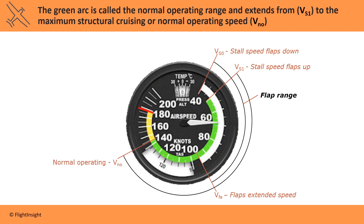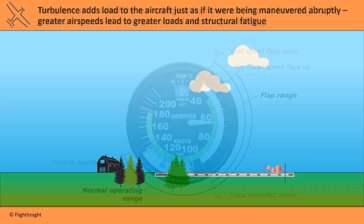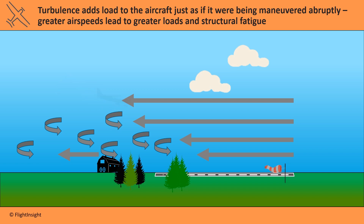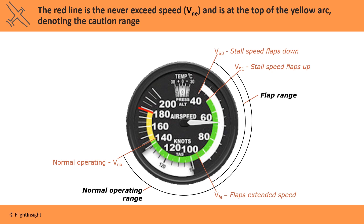The green arc is the normal operating range — green for normal. Below the green arc you're only flying with the flaps out, and at the top of the green arc you have the maximum normal operating speed, or VNO — the NO for normal operating. The test also refers to this as the maximum structural cruising speed. Turbulence adds load to the aircraft, just as if it were being maneuvered abruptly. The airframe doesn't care — a load is a load. Greater airspeeds lead to greater loads and can fatigue the structure, so VNO is the maximum recommended speed for flying through rough air. If the air is smooth, you can fly in the yellow arc until you hit the red line, which is the never-exceed speed, VNE. Even in smooth air, you'd expect things to start snapping off the plane past this speed. The yellow arc is the caution range — outside the normal operating range, but as long as you're in smooth air, you're okay.